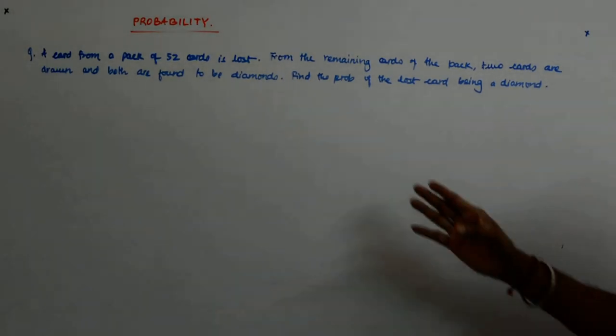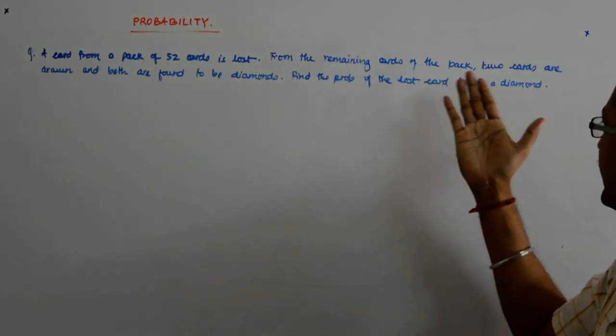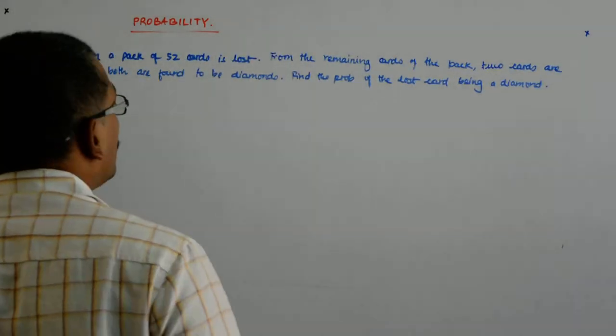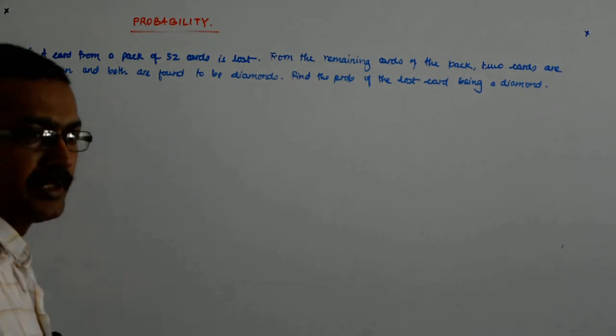A card from a pack of 52 cards is lost. From the remaining cards of the pack, two cards are drawn and both are found to be diamonds.